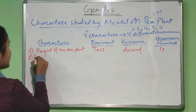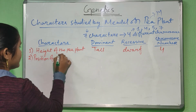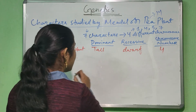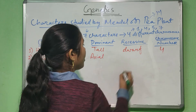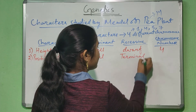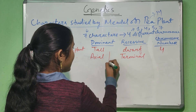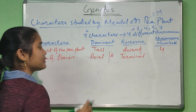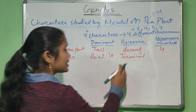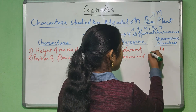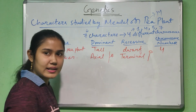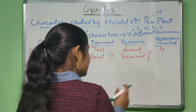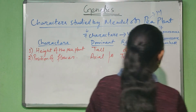The second character is the position of the flower. The flower can be axial or terminal. If the flower is present in the axis or on the stem, it is axial. If the flower is present at the terminal position, at the end, it is called terminal. This character is located in the fourth chromosome.